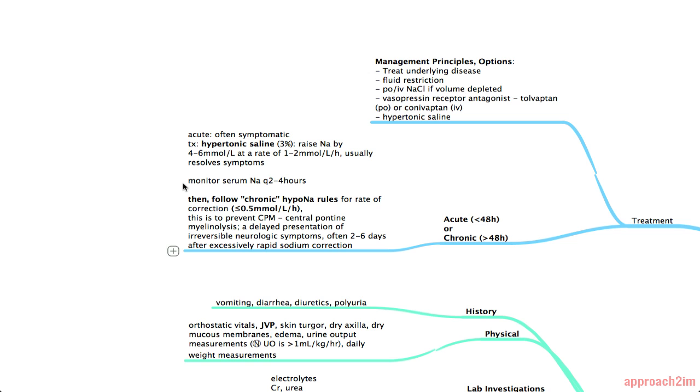Monitoring is extremely important so get the serum sodium every 2 to 4 hours. After you've increased the sodium by 4 to 6 then you can follow the guidelines of treating chronic hyponatremia. That means correcting at equal or less than 0.5 mmol per liter per hour. And this is to prevent CPM central pontine myelinolysis.